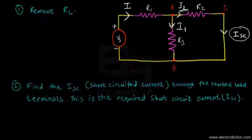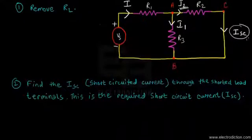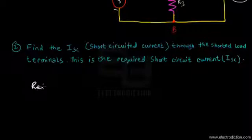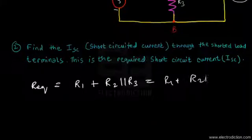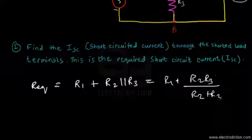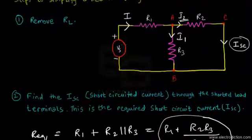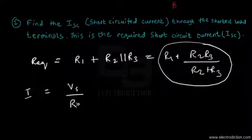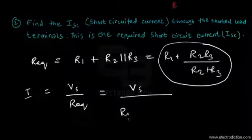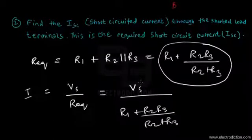To find the equivalent resistance offered to the voltage source, we have R1 in series with R2 and R3 in parallel, giving R_eq = R1 + (R2·R3)/(R2 + R3). The total current I from the source is therefore I = V_S / [R1 + (R2·R3)/(R2 + R3)].